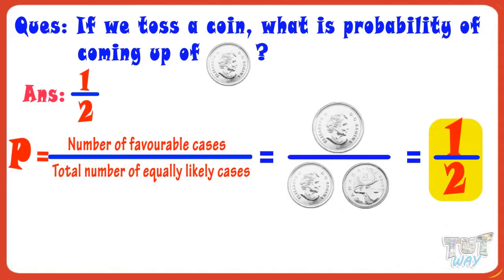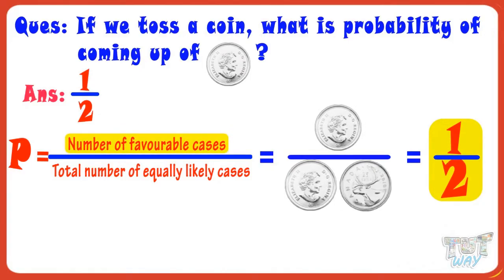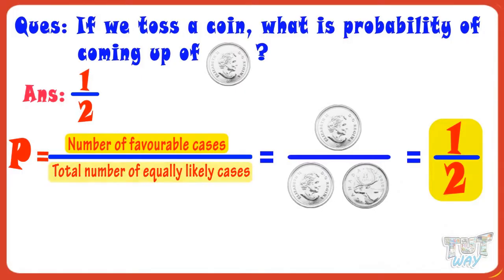Here, 1 is the favorable case, and 2 is the total number of cases possible. Now, let's take another example.